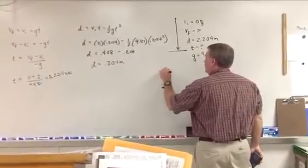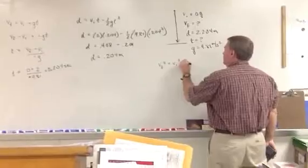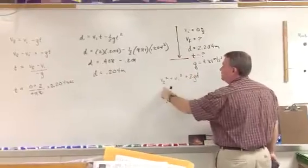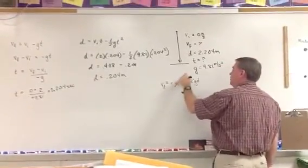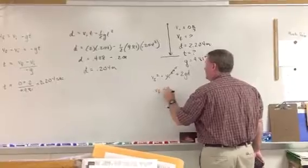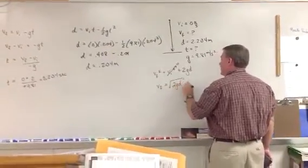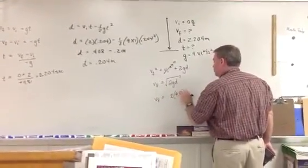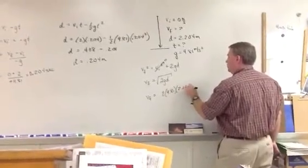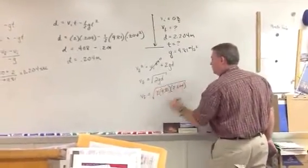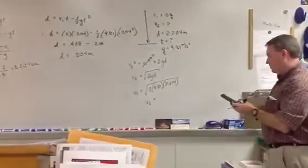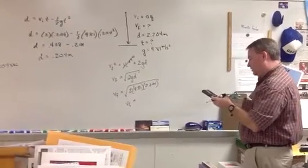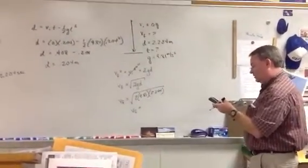I'll go straight to VF squared is equal to VI squared plus 2GD, because you're going with gravity downward, so it's positive. We're looking for final velocity. Initial velocity is 0, that's gone. So VF is going to be equal to the square root of 2 times gravity times the height. VF equals the square root of 2 times 9.81 times 2.204. That gives us 6.6 meters per second.